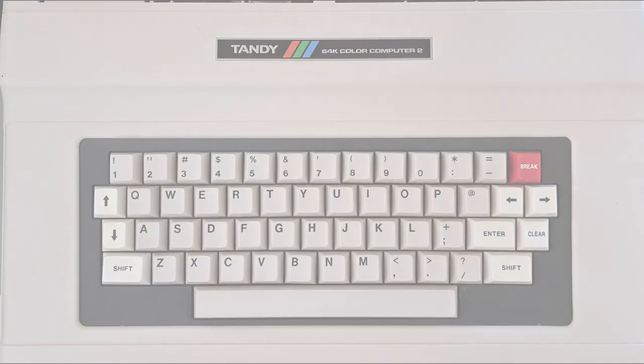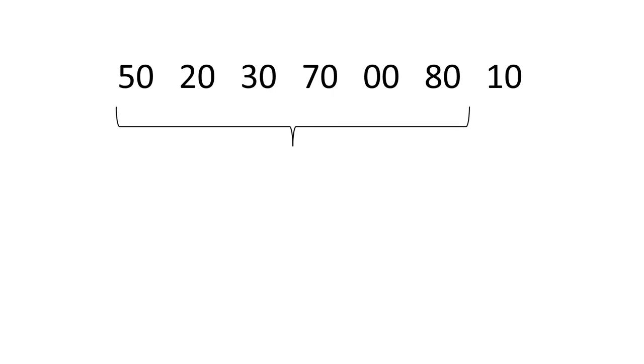For our assembly language program, we'll tackle a simple problem. Given a list of numbers, find the smallest one. Our recursive approach will use the very routine we're writing to find the smallest number among the slightly shorter list of all numbers except the last one. Then, all we have to do is compare that minimum with the very last number. Whichever is smaller will be our final answer.